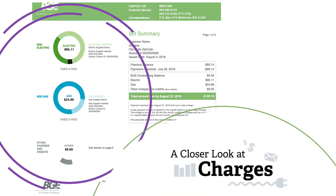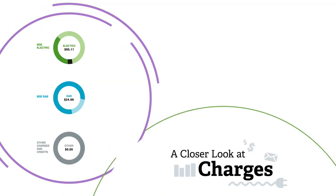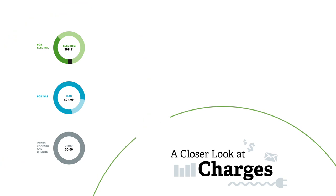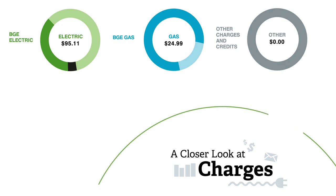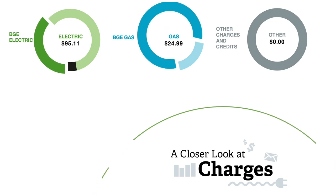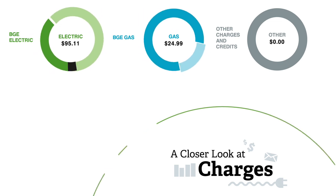The circle graphs next to the bill summary provide a visual depiction of how your charges are broken out. Your energy charges are divided into three parts: delivery, supply, and other charges.